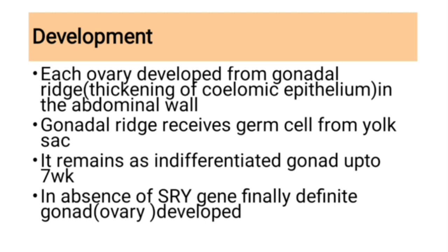Development of the ovary: each ovary develops from the gonadal ridge, which is a thickening of the coelomic epithelium formed in the abdominal wall. The gonadal ridge receives germ cells from the yolk sac. This gonad remains indifferentiated up to seven weeks — we cannot differentiate between ovary and testis during this period. In the absence of the SRY gene, ovary formation occurs; if SRY gene is present, testis forms.